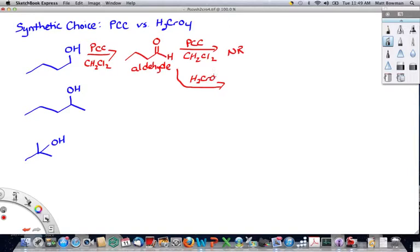Chromic acid, on the other hand, will, and aldehydes are actually more reactive than alcohols are. And so, it will take an aldehyde up to a carboxylic acid.